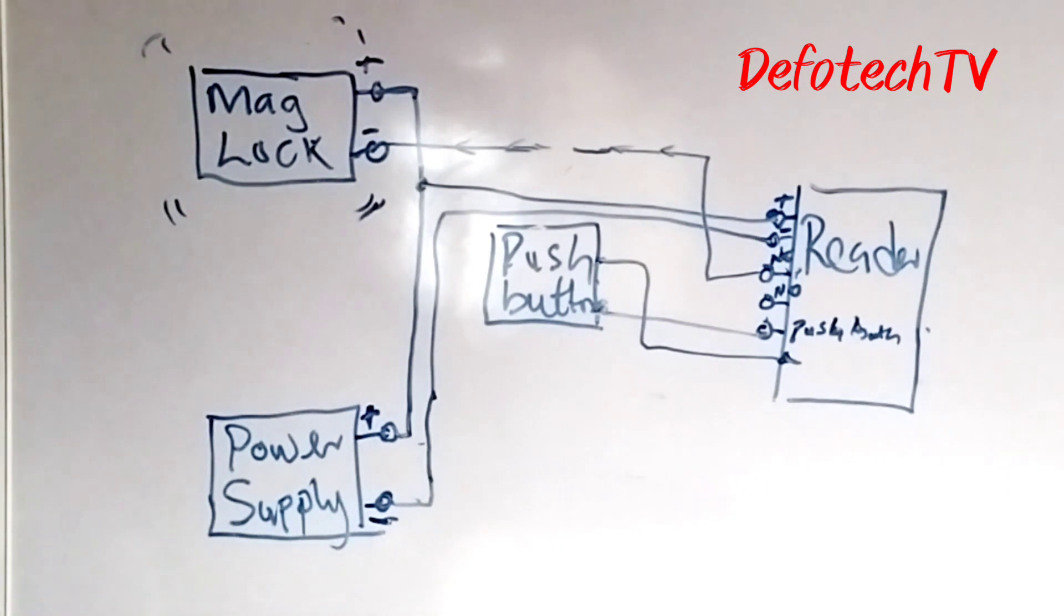Like I said in that video, I talked about your reader is the only device that is seen outside before you gain access into the area that has restricted entrance. Your reader will be outside. Your push button, your mag lock, your power supply, and the door closer will be inside. That's for that.